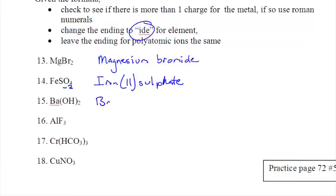Ba is barium. OH is hydroxide. Aluminum is Al. And F is fluorine. So you change it to fluoride.